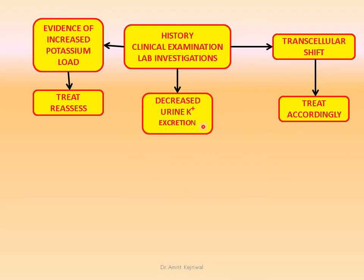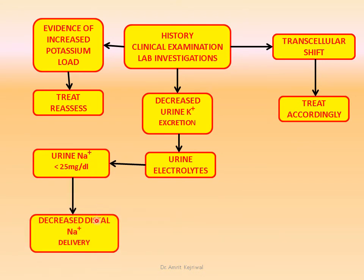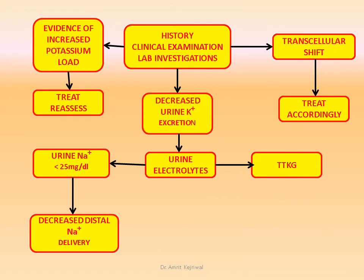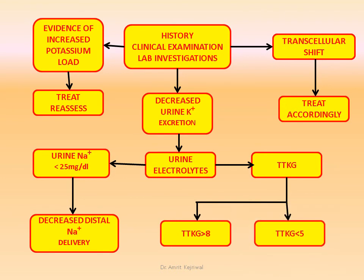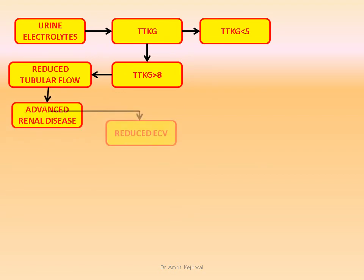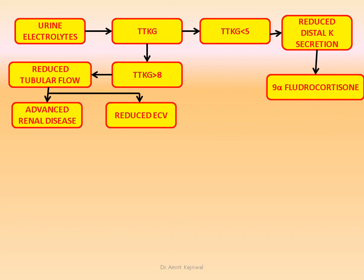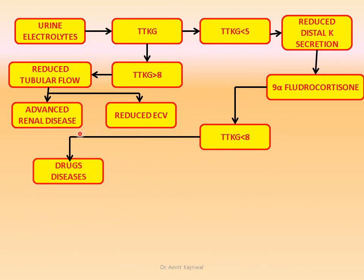For decreased potassium excretion, do urinary electrolytes. If urinary sodium is less than 25 mEq/L, it means decreased delivery of sodium to the distal part. If urinary sodium is greater than 25, do the TTKG. The TTKG may be greater than 8 or less than 5. If TTKG is greater than 8, it suggests reduced tubular flow, indicative of advanced renal disease or reduced extracellular fluid volume. If TTKG is less than 5, it means reduced distal potassium secretion. Administer 9-alpha-fludrocortisone and reassess the TTKG; if it remains below 8, it may be due to a variety of drugs and diseases.